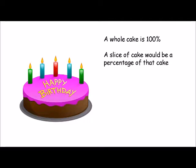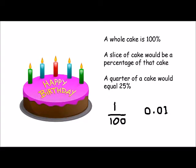So the whole cake is 100%, and a slice of cake would be a percentage of that cake. If we cut the cake into a hundred pieces, each piece would be 1%, and a quarter of the cake would be 25%.